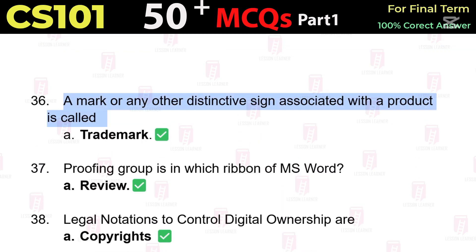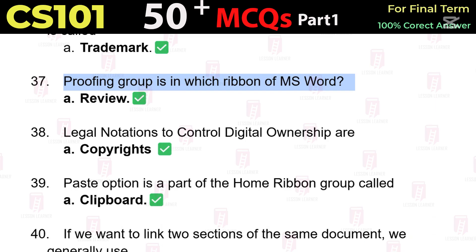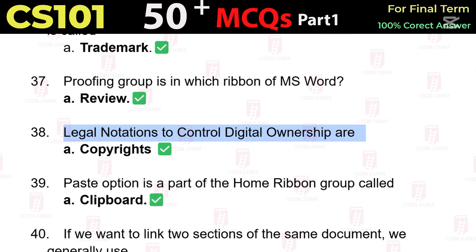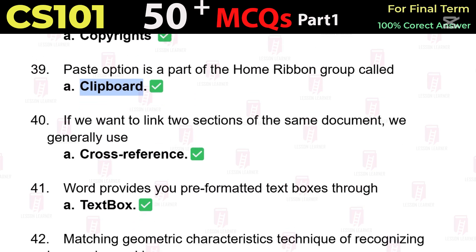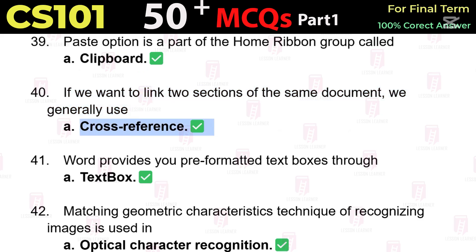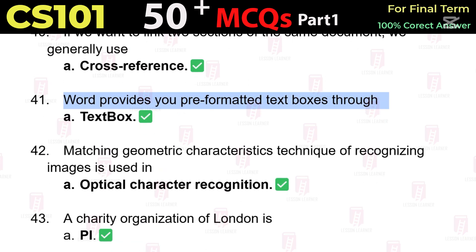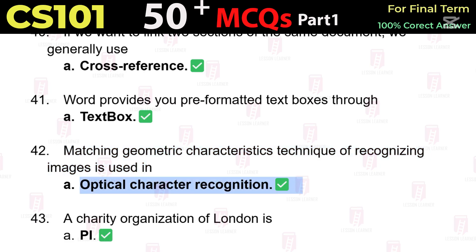SmartArt was introduced in MS Word version 2007. A mark or any other distinctive sign associated with a product is called a trademark. Proofing group is in the Review ribbon of MS Word. Legal notations to control digital ownership are copyrights. Paste option is part of the Home ribbon group called Clipboard. To link two sections of the same document, we generally use cross-reference. Word provides preformatted text boxes through the Text Box feature.